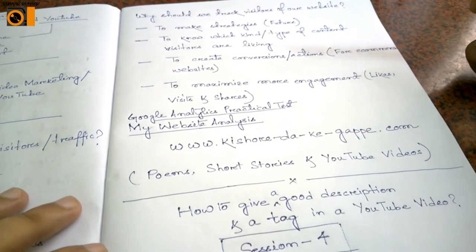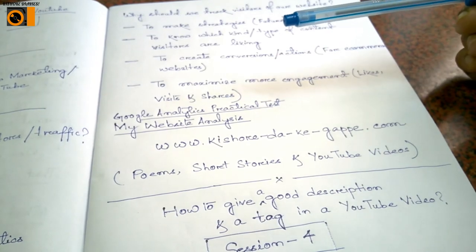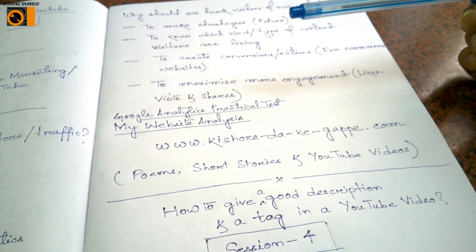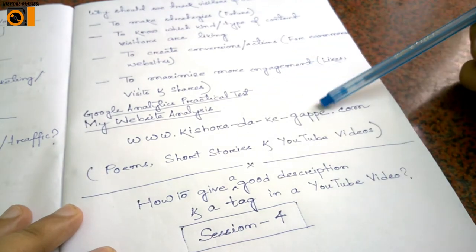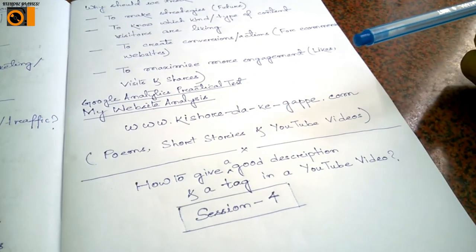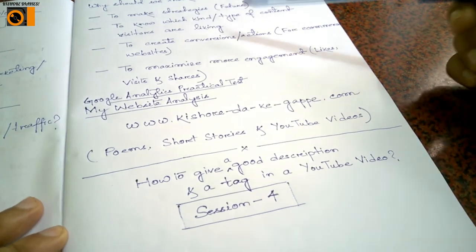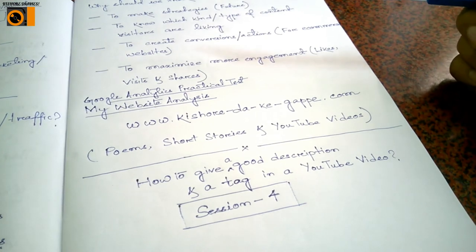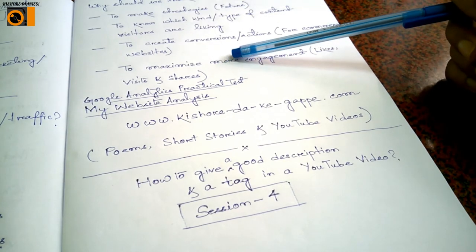We'll be going for a Google Analytics practical test. I have my own website — it's a new one but it has got some traffic, which we'll be testing on Google Analytics. The website name is www.kishordakegappe.com. It is about poems, short stories, and YouTube videos — unique content. I'll be sharing my desktop with you, showing you the various ways to track demographics, behaviors, characteristics, and landing pages via Google Analytics.